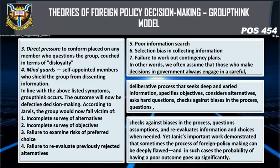We often assume that those who make decisions in government always engage in a careful, deliberate process that seeks deep and varied information, specifies objectives, considers alternatives, asks hard questions, checks against biases, questions assumptions, and re-evaluates information and choices when needed. Yet Janis's important work demonstrated that sometimes the process of foreign policy making can be deeply flawed, and in such cases the probability of having a poor outcome goes up significantly.